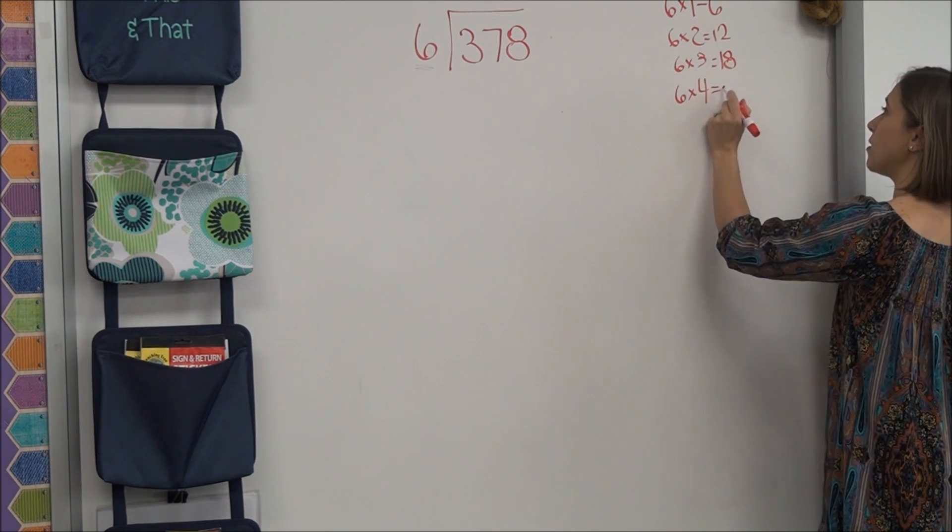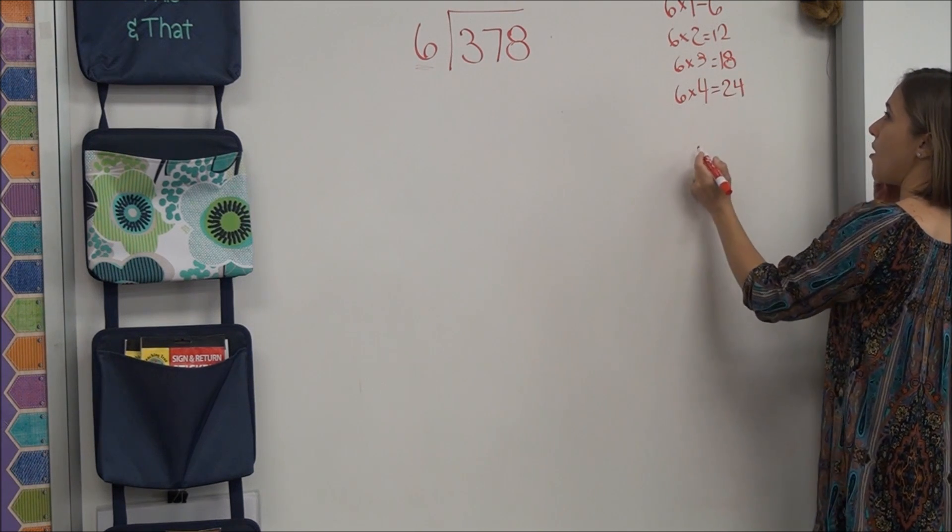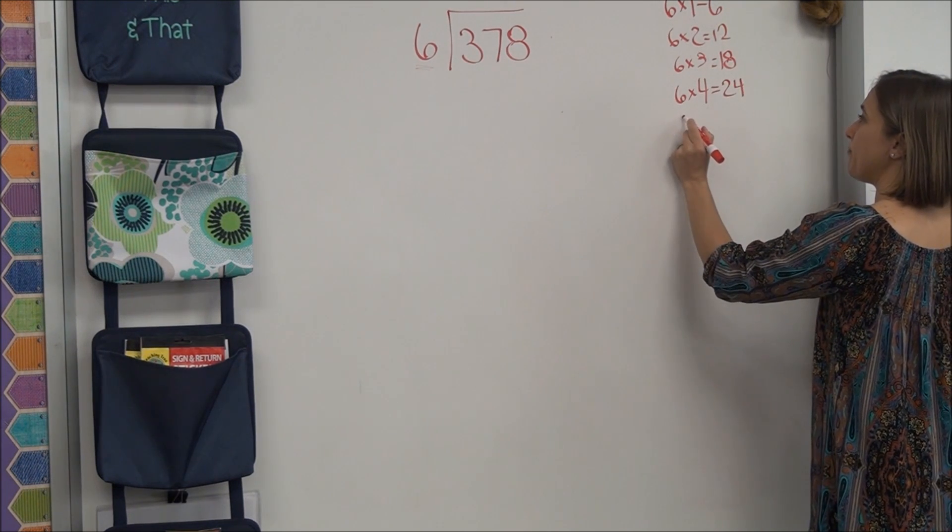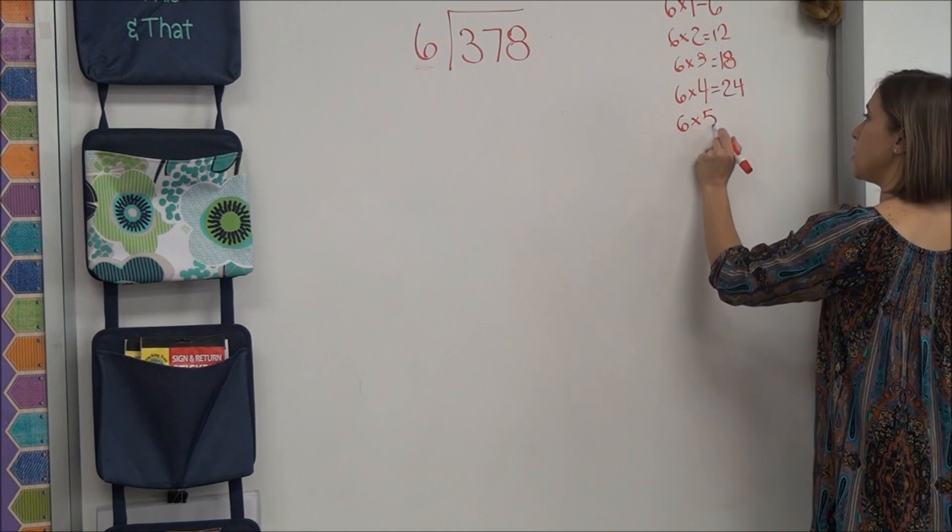What is 6 times 4? 24. Oh, let's do one more. What's 6 times 5? 30. 30.